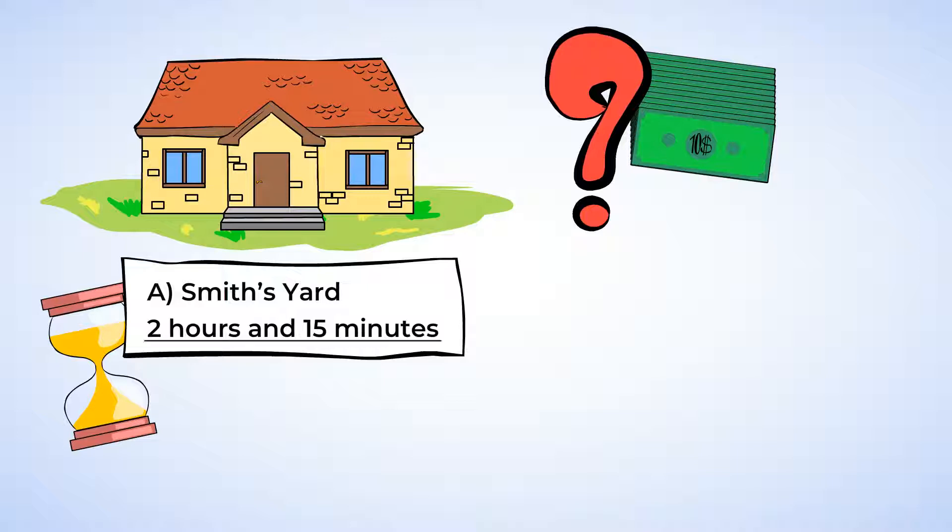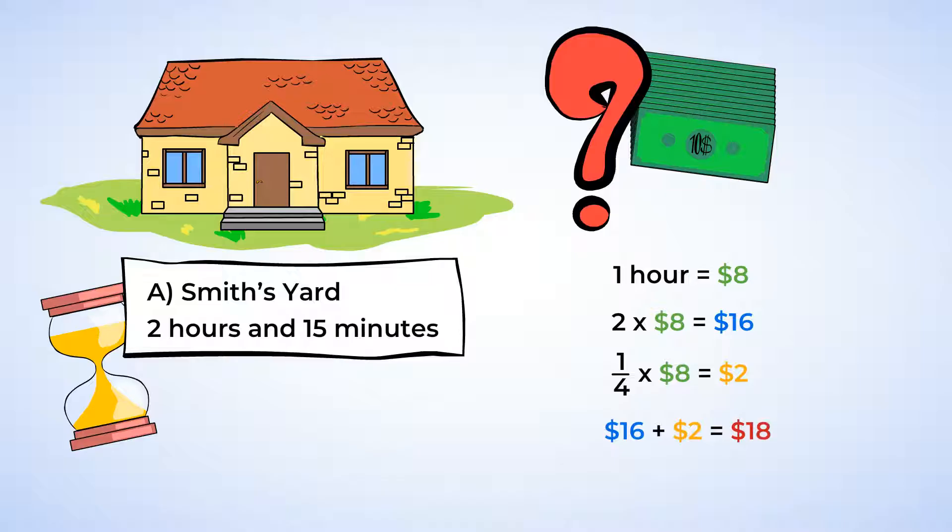It took Chen two hours and 15 minutes to mow the yard. Each hour is $8. And this means we need to multiply two times eight, which gives us 16. And then 15 minutes is one-fourth of an hour. And so one-fourth of eight is two. So 16 plus two is 18. Chen earns $18 for mowing the Smiths' yard.